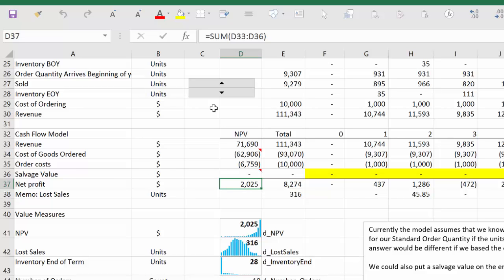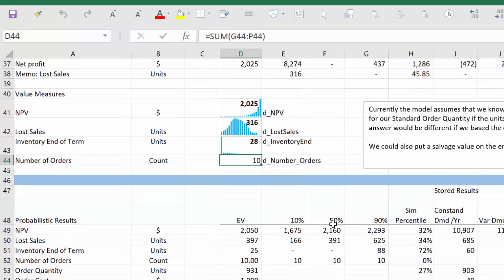We now have our net present value. This is a little histogram of that. We can also calculate the lost sales in a similar way. And we can look at the inventory at the end of the 10 years and the number of orders. In this case, it ordered every year. We can then calculate the expected value and the percentiles for various metrics. We captured here the NPV, lost sales, end of term, number of orders, and so forth and so on.